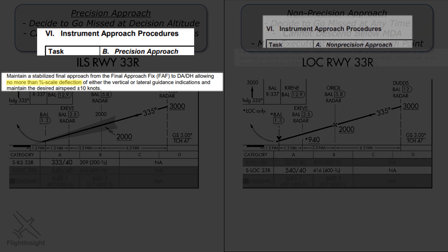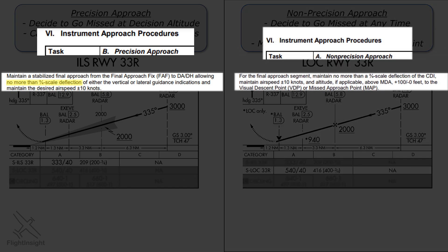The non-precision approach standards, on the other hand, require you to maintain the minimum descent altitude with a buffer of plus 100 feet and minus zero feet. In other words, going below the MDA, even a little bit, can earn you a bust on your checkride. So when they say minimum, they mean it. You do get a 100-foot buffer above the MDA though, so why not use that? Give yourself a bit of cushion.